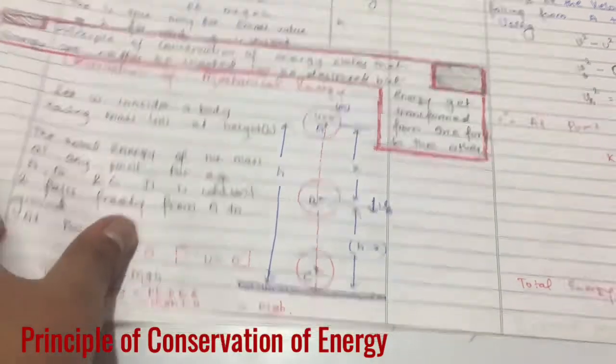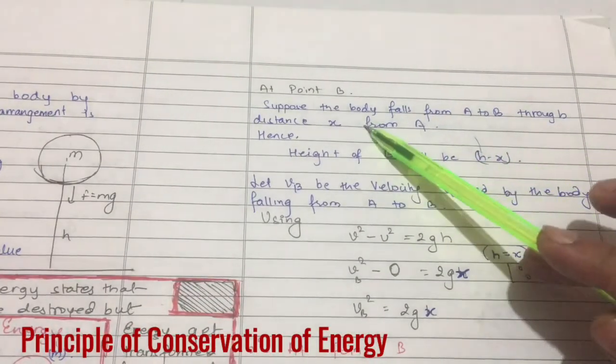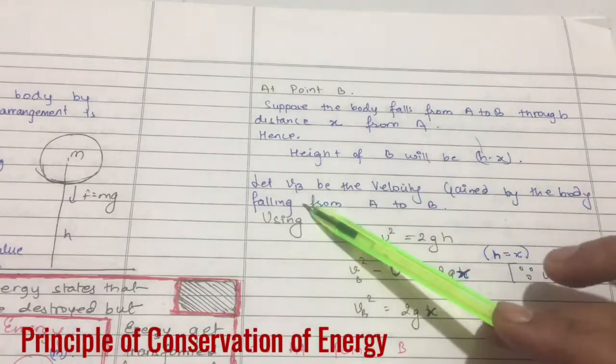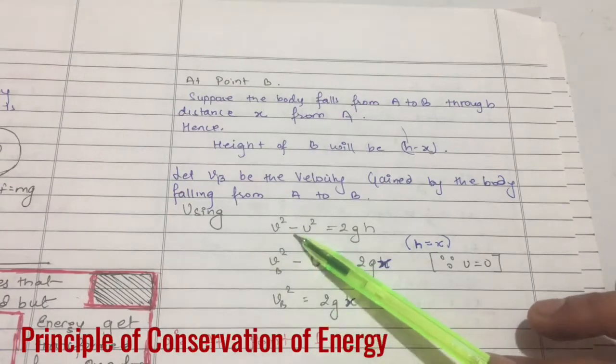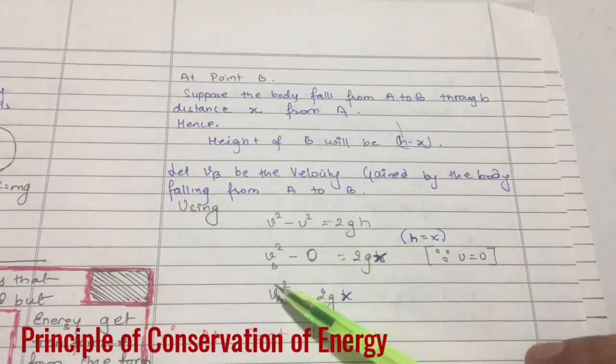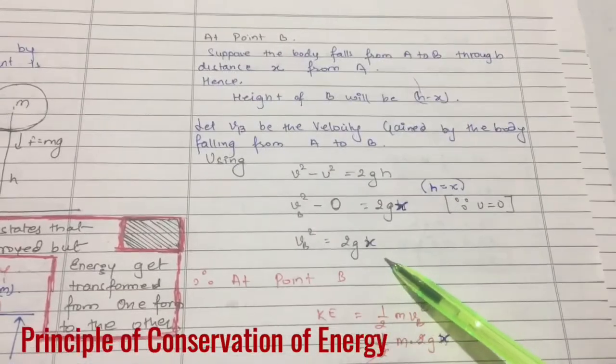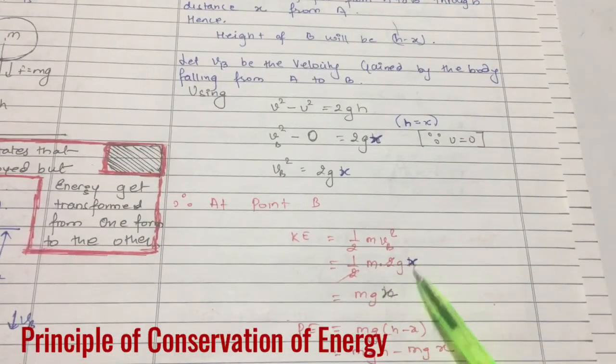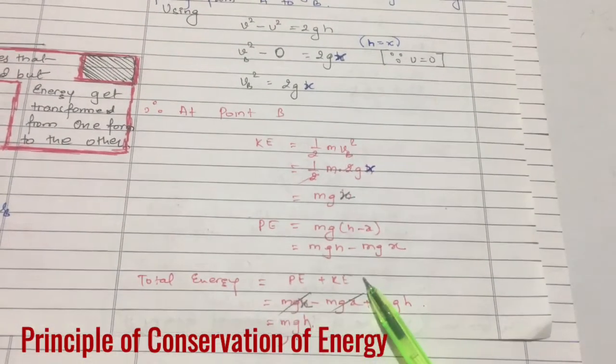At point B, suppose the body falls from point A to B through a height of x from A. Hence height will be h minus x. vB is the velocity gained by the body falling from A to B. Using Newton's third equation of motion, v squared minus u squared equals 2gh. Since u is zero, v squared equals 2gx.